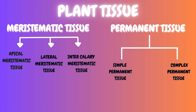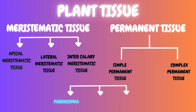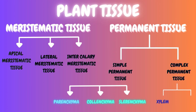On the other hand, permanent tissue is divided into simple permanent tissues and complex permanent tissues. Simple permanent tissue is of three types: parenchyma, collenchyma and sclerenchyma. On the other hand, complex tissue is of two types: one is xylem and the second one is phloem.